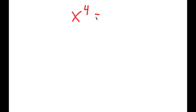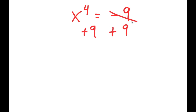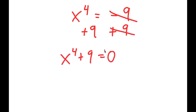For this video, I'm going to be solving the equation x to the power of 4 is equal to negative 9. So what I'm first going to do is add 9 on both sides, so these two cancel out and I get x to the power of 4 plus 9 is equal to 0.